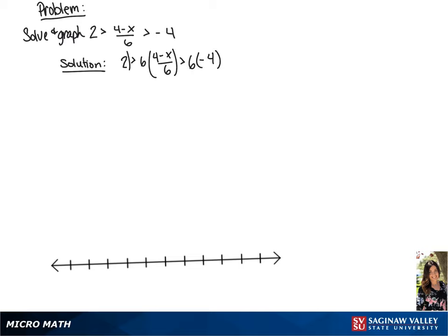We are going to multiply all sides of this inequality by 6 in order to clear the fraction. This is going to give us 12 is greater than 4 minus x, and 4 minus x is greater than negative 24.